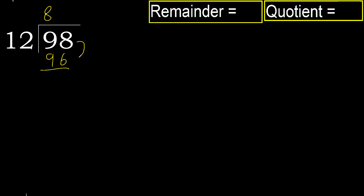98 minus 96 is 2. There is no next number, therefore finish it.